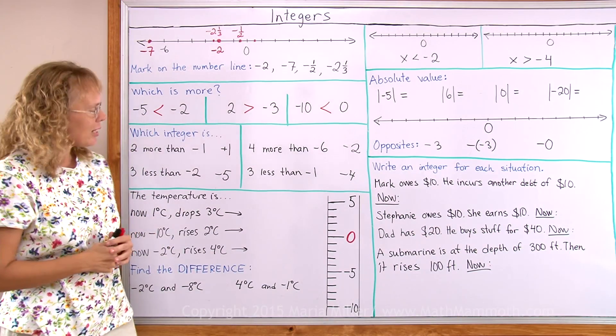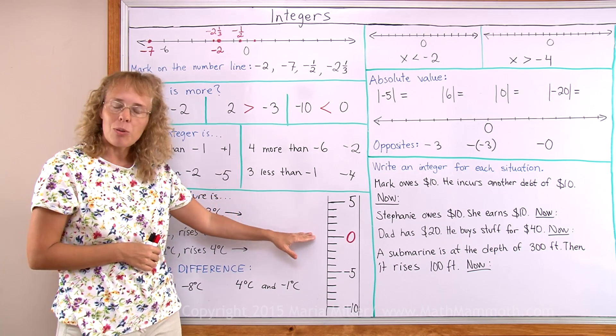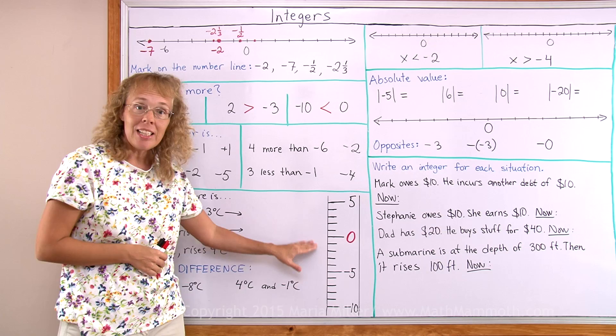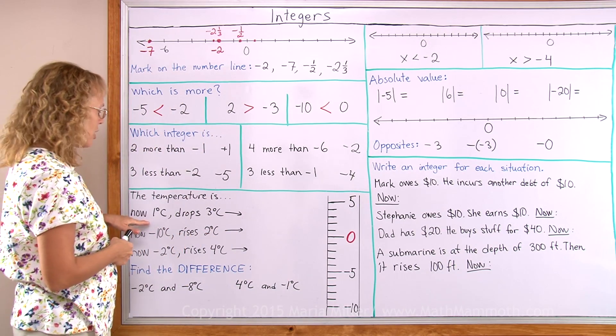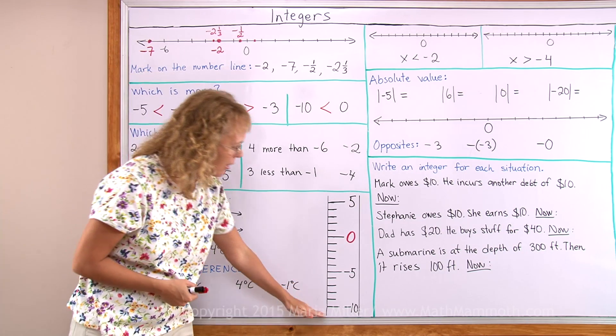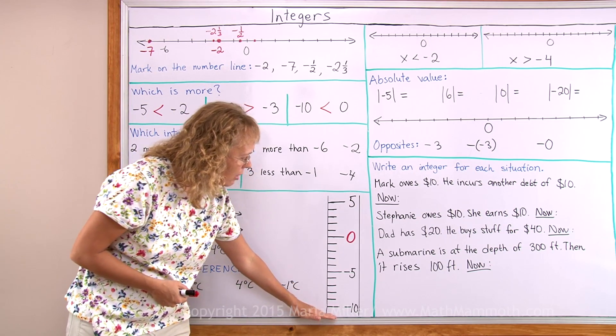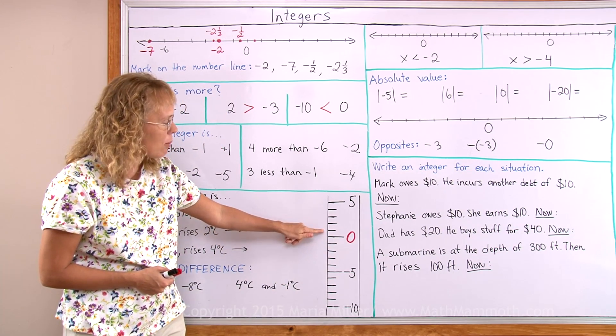Here we are going to look at temperature. As you probably know, in temperature we have 0 point and below that we have negative numbers. So let's say the temperature is now 1 degree Celsius. That means that the liquid in your thermometer would be up to this point. 1 degree above 0.